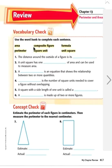First we'll go to the vocabulary check. Please read all the words with me as I go: area, composite figure, formula, perimeter, square unit, unit square. Alright, let's begin answering the questions 1 through 6.